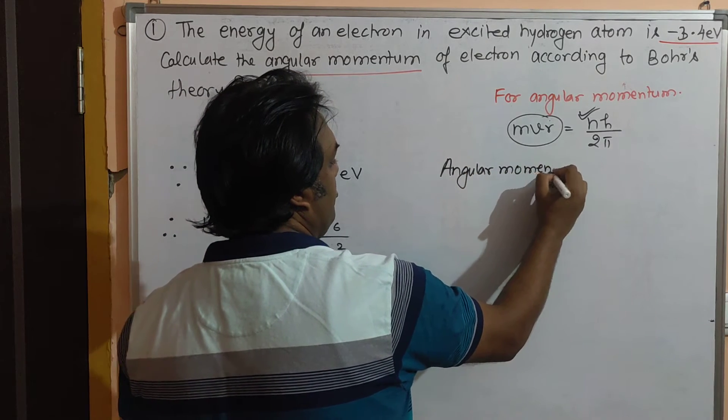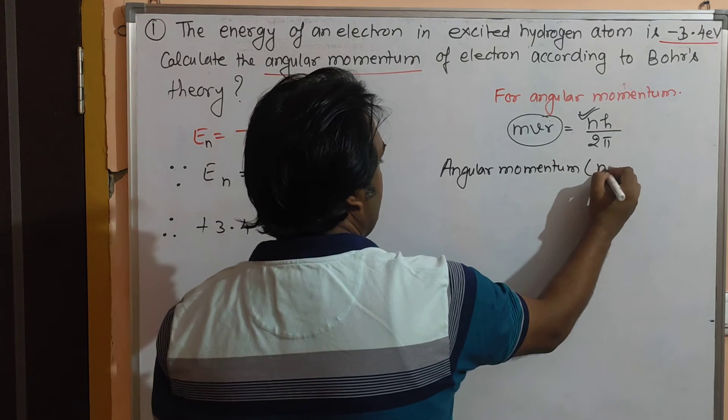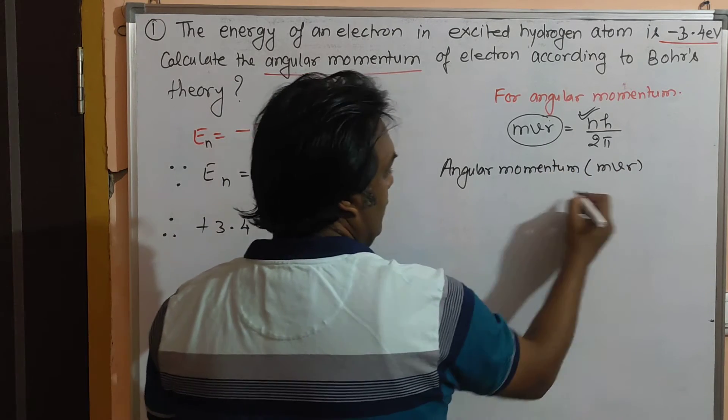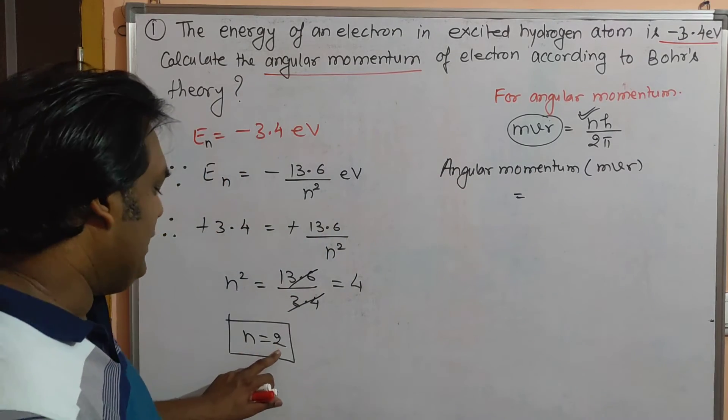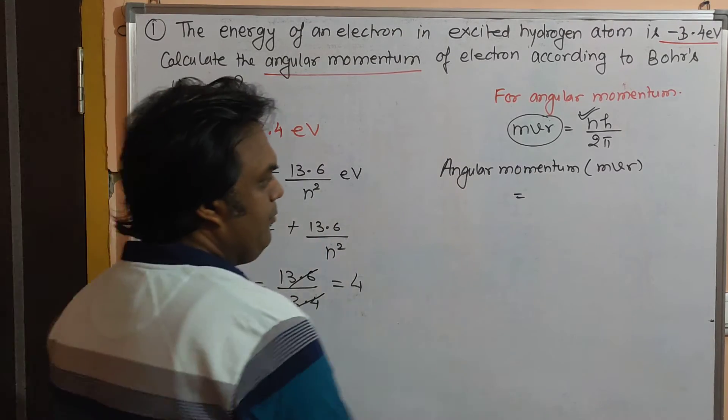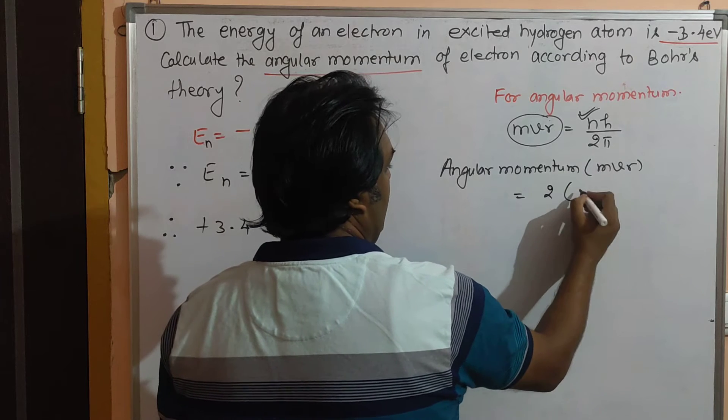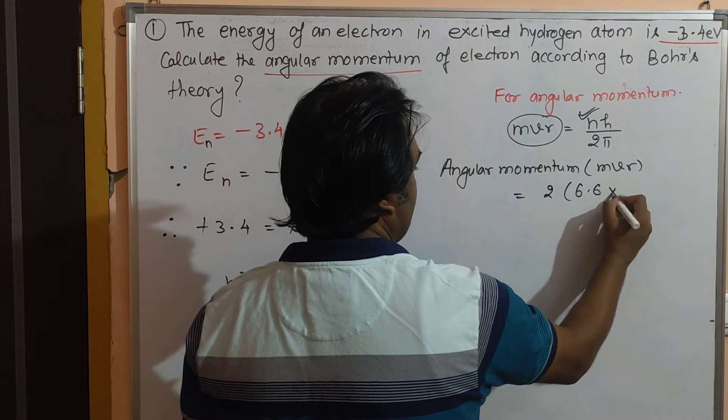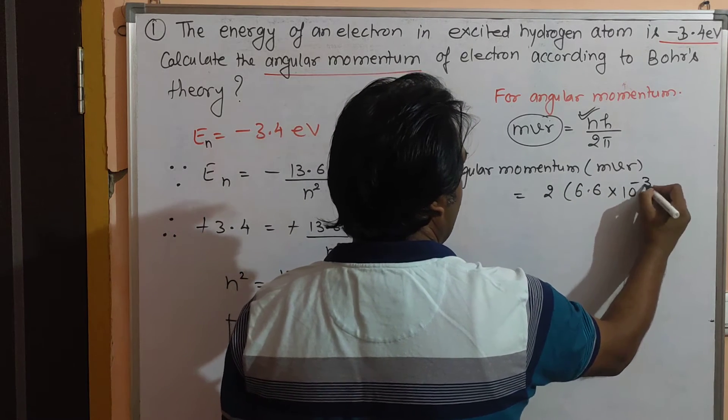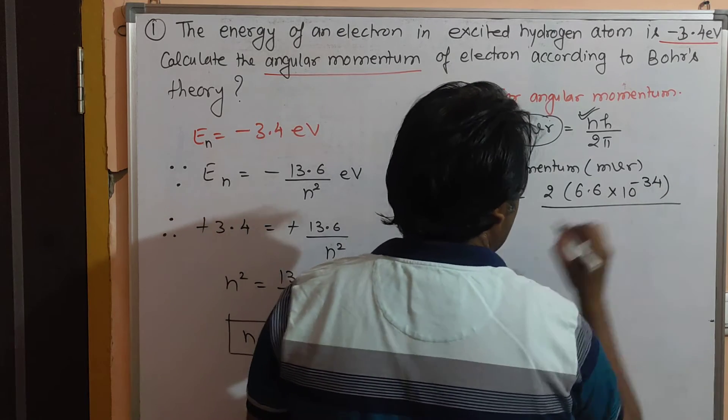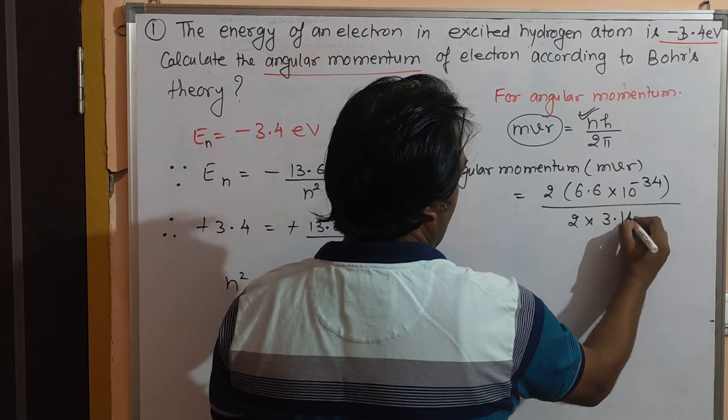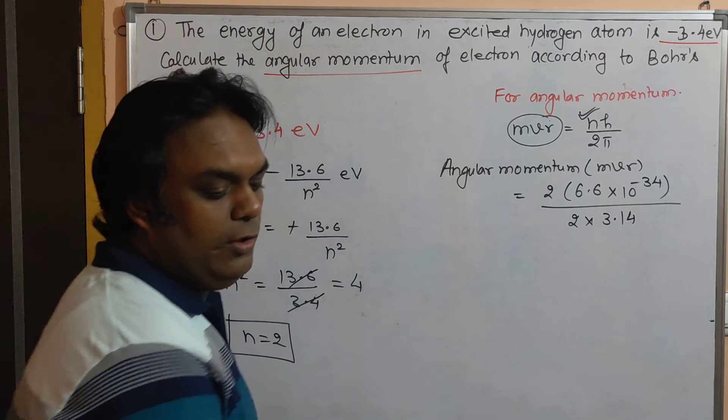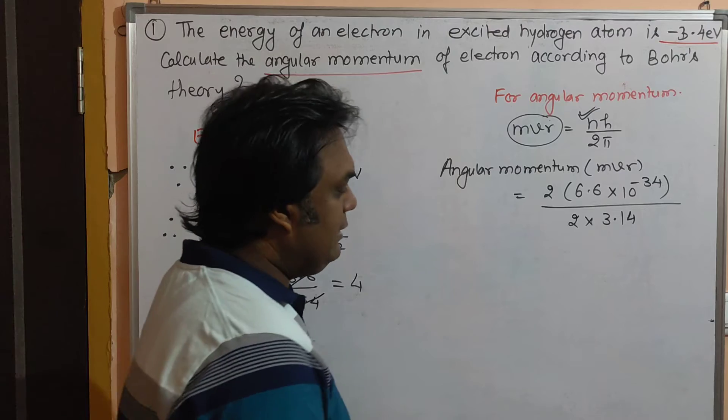So angular momentum, MVR, equals n h upon 2π. The value of n is 2, h is 6.6 × 10⁻³⁴, divided by 2 × 3.14.